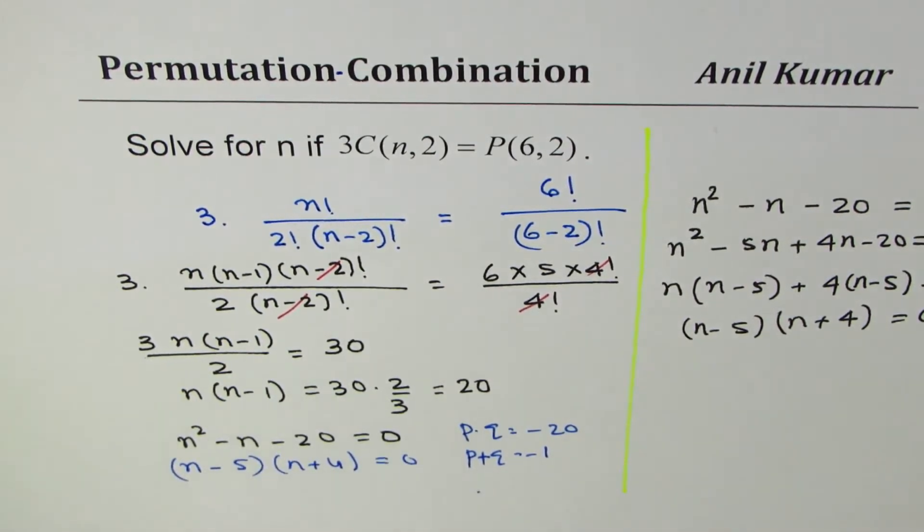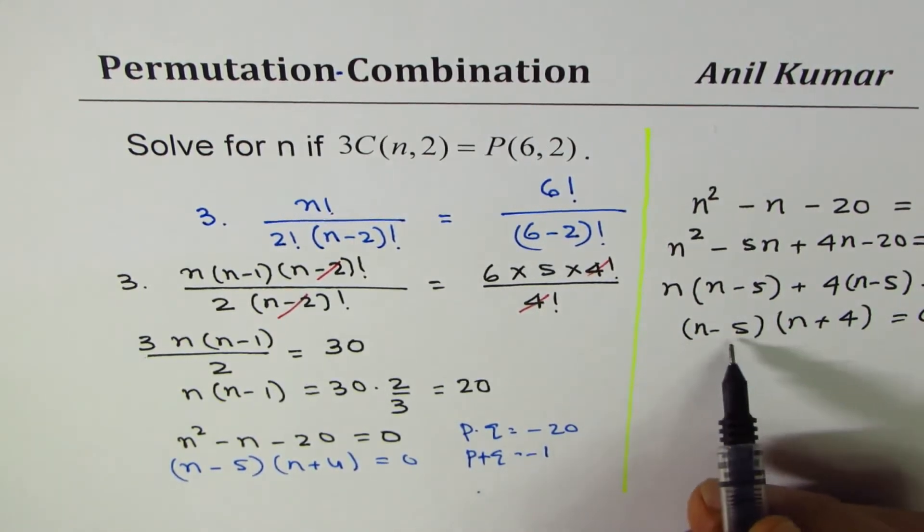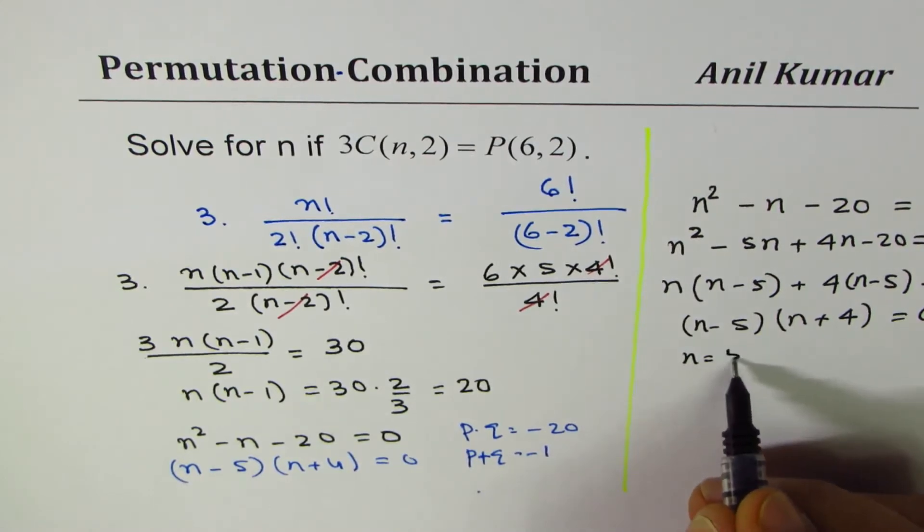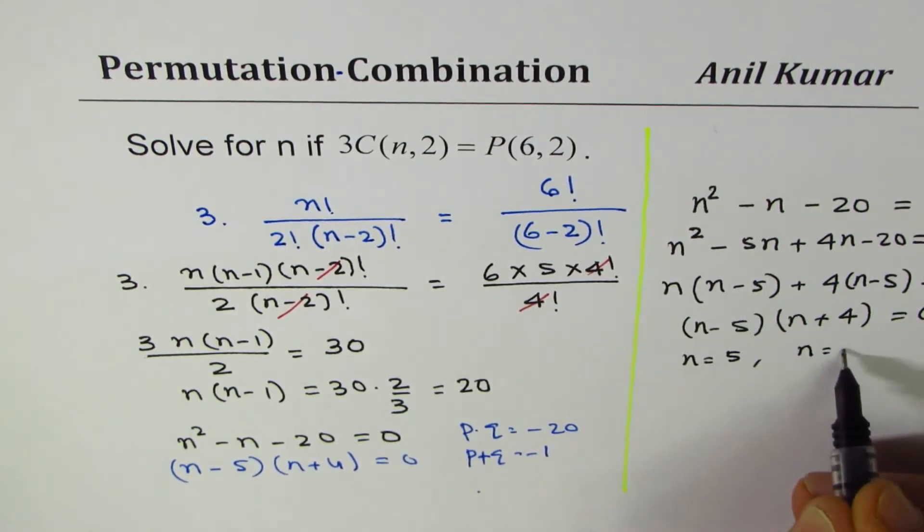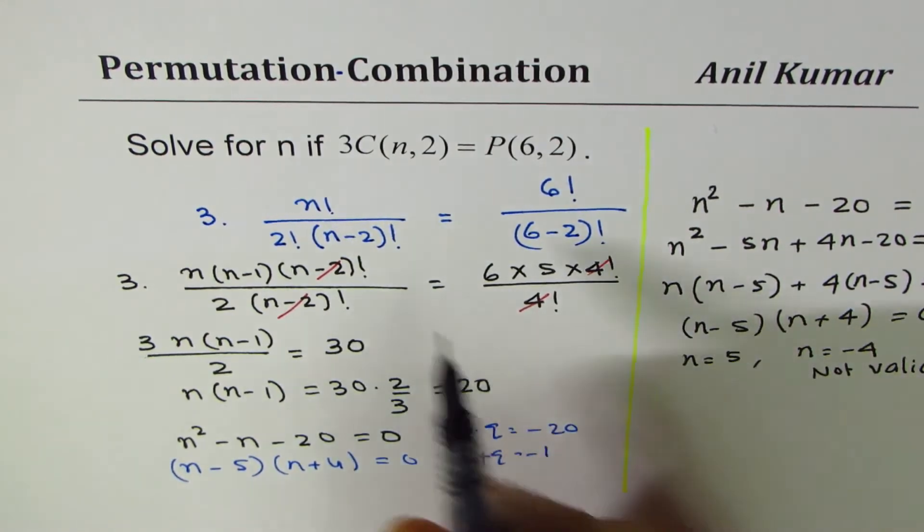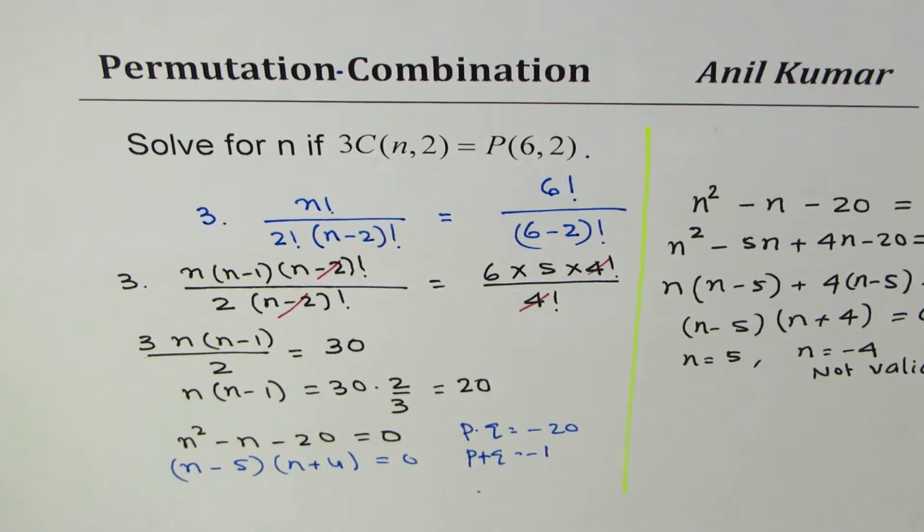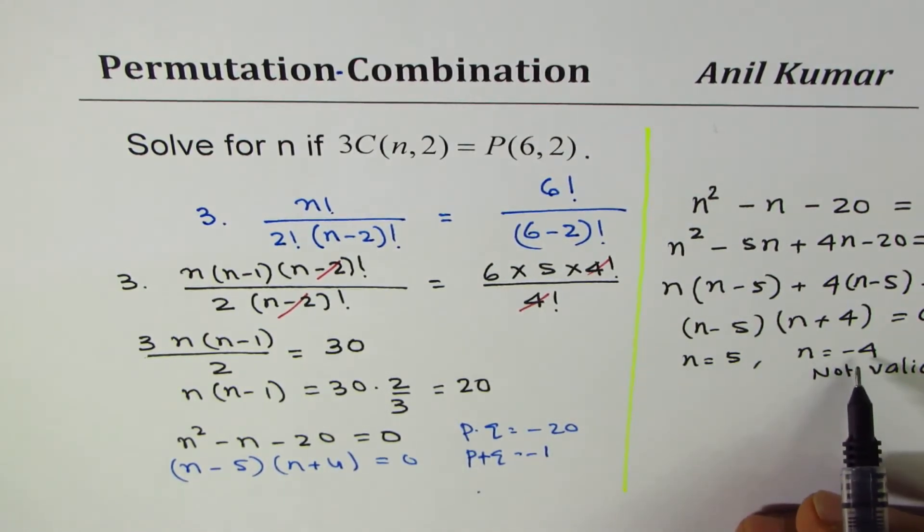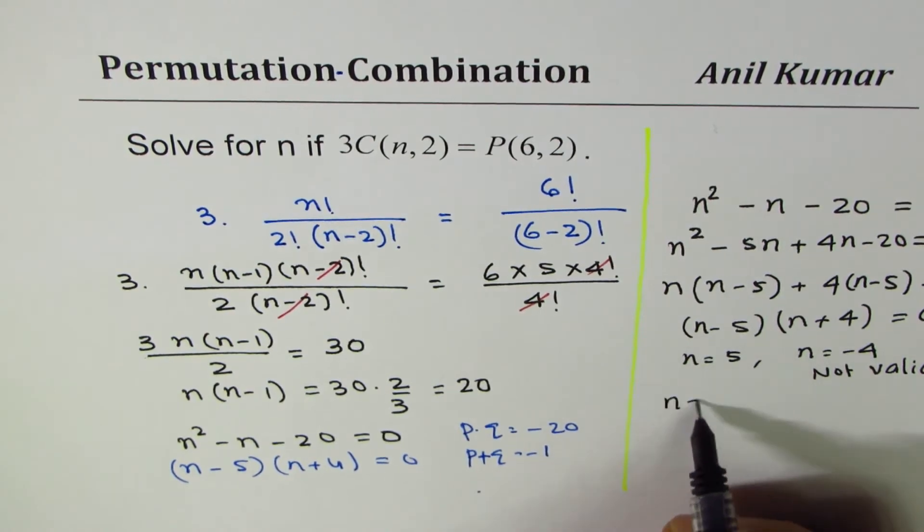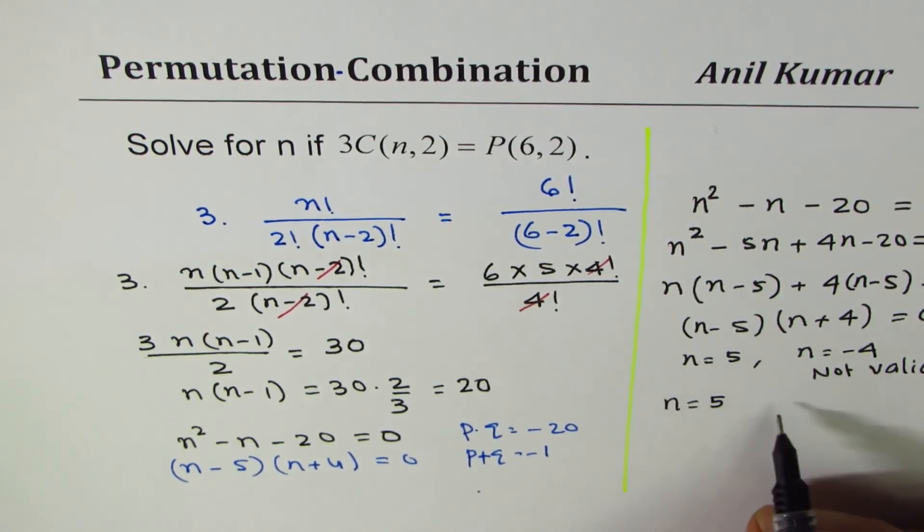This gives you two results which is n equals 5 or n equals -4. But -4 is not possible, not valid in permutation combinations. We are working with non-negative integers, so n equals 5 is the right option. n equals 5 is the solution.